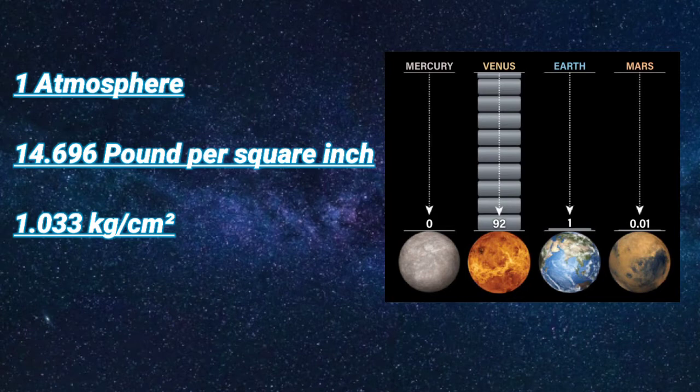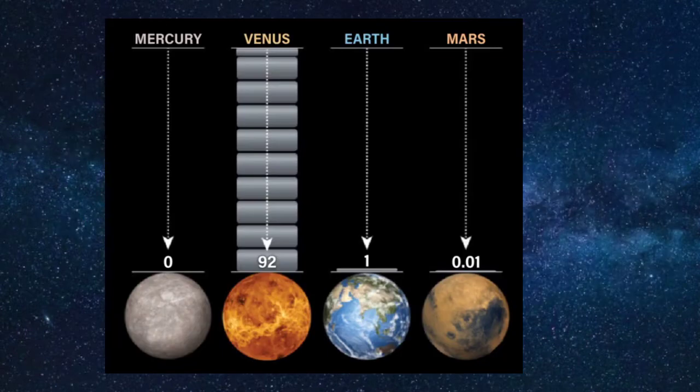One atmosphere is equivalent to 14.696 pounds per square inch, or 1.033 kilograms per centimeter squared. This is how other terrestrial planets compare to our own, as a ratio of Earth's surface pressure — you can see the image now.